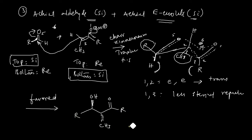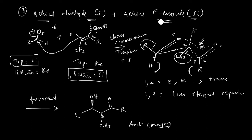So this Zimmermann-Traxler transition state is favored. Since R and methyl are in a trans relationship, you will end up with the anti-product as major. So anti is the major product when an acyl aldehyde is treated with an acyl E-enolate.